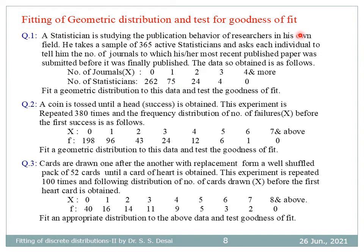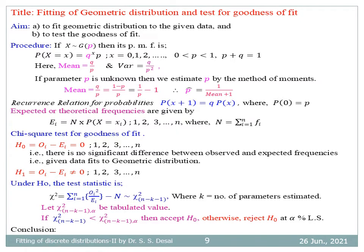These are the questions for fitting geometric distribution. In the first problem, X is the number of journals to which the researcher submitted his paper before it was finally published, and the number of researchers (statisticians) is the observed frequency. In the second problem, X is the number of failures — that is, number of tails before getting the first head — and these are the frequencies. In the third problem, these are the different values of X and these are the frequencies.